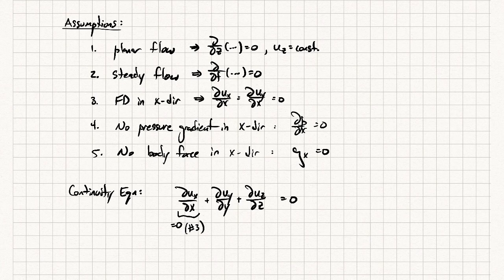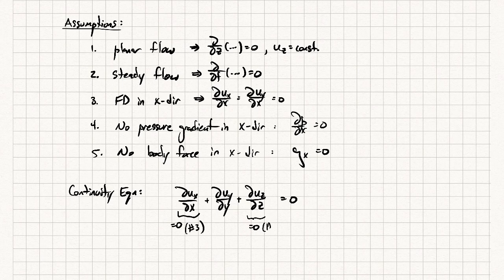When you set terms to zero it's a good idea to indicate why they're zero. The ∂u_z/∂z term is zero because of assumption one — planar flow. The ∂u_y/∂y term we're not told anything about, so we have to leave it. From the continuity equation we see that the y velocity does not vary in the y direction.